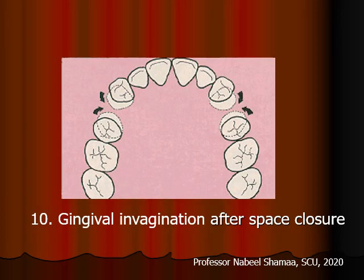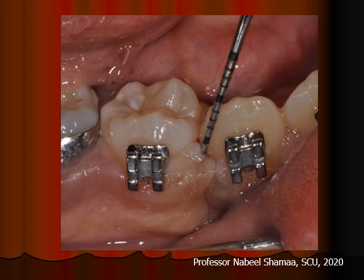Another cause could be gingival invagination after space closure. After extraction of the first premolar, when the canine and second premolar are brought together, there can be invagination of the gingival tissue, which should be removed before entering the retention phase. This is a common problem during canine retraction and space closure.